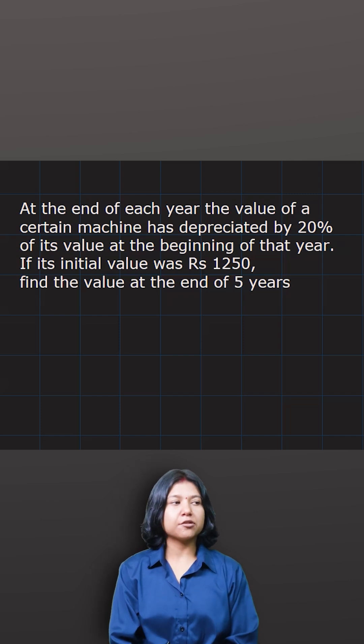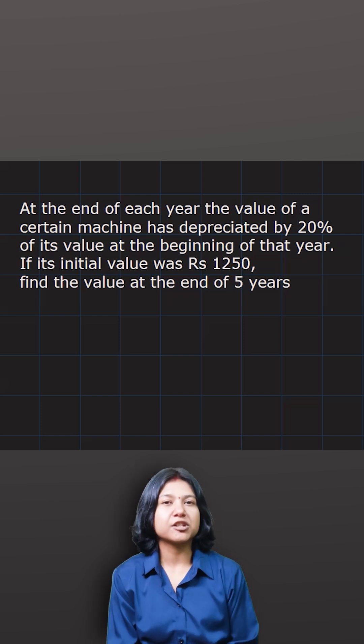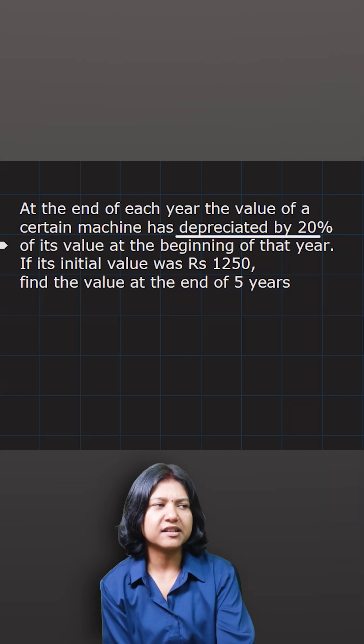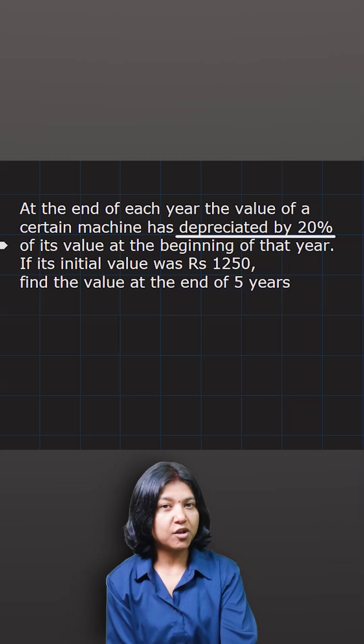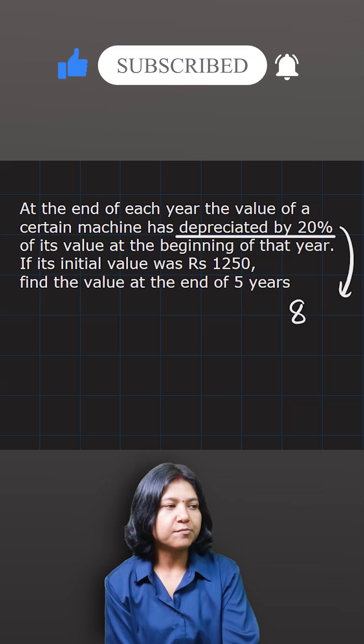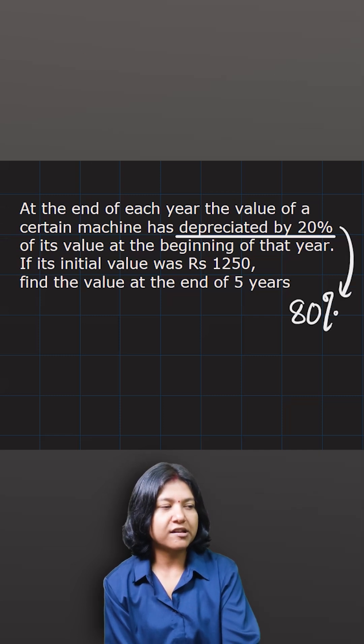Look at this question. It's talking about the value of a machine being depreciated by 20%, depreciating as in decreasing by 20% every year. So decreasing means you have to subtract 20%, telling you that the new value will always be 80% of the original. 80% as a decimal, you can write it as 0.8.